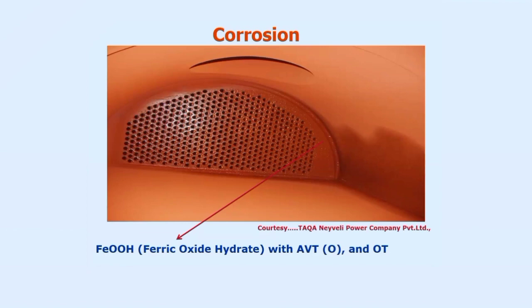In ABTR treatment, we are not using TSP in the drum, but we are using ammonia and hydrazine dosing after deaerator treatment. Now, what is the difference between this treatment and ABTO and OT? In ABTO and OT treatment, we do not use hydrazine at any point of time. In ABTO, we are using only ammonia and nothing else. In oxygenation treatment, we are using ammonia and oxygen dosed at certain points.